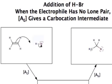Now it might at first seem odd to say that this electrophile has no lone pair because the bromine atom, after all, has three lone pairs on it. But notice that the bromine atom is not acting as the electrophile.